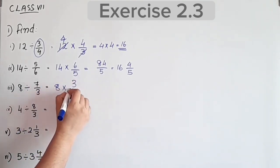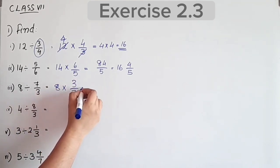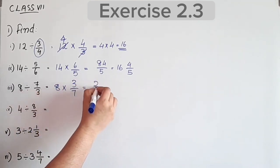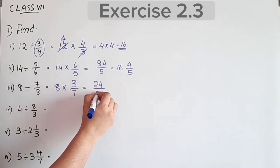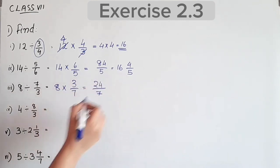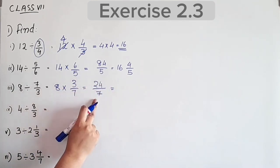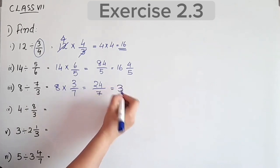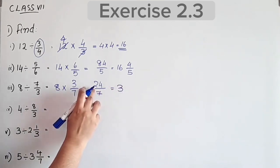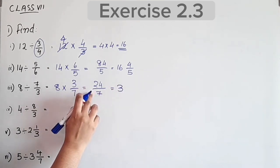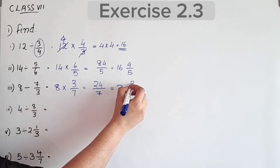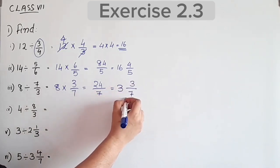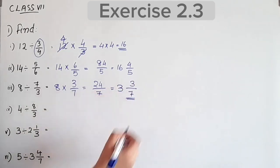3/5 divided by 8 equals 1 by 5. 24 divided by 7: 7 threes are 21, 24 minus 21 gives remainder 3. The numerator is 3 and the denominator is 7.